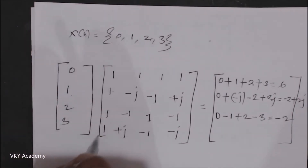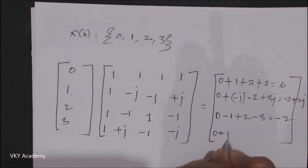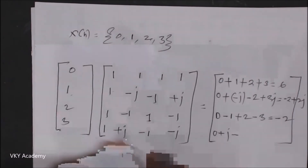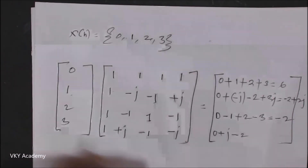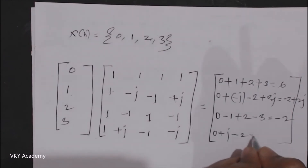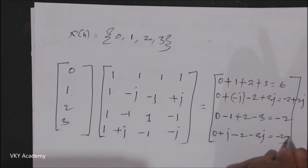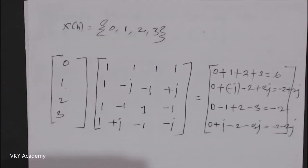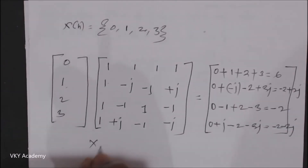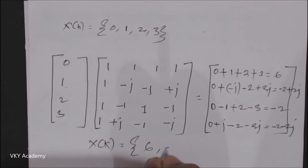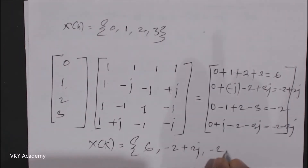For X(3): 0×1 + 1×(+j) + 2×(-1) + 3×(-j) = 0 + j - 2 - 3j = -2 - 2j. Finally, the DFT result is X(k) = {6, -2+2j, -2, -2-2j}. The first sample has only a real part; the second has real and imaginary parts; the third has only a real part; and the fourth has real and imaginary parts.